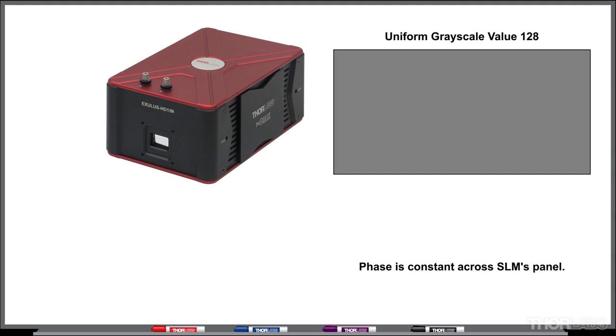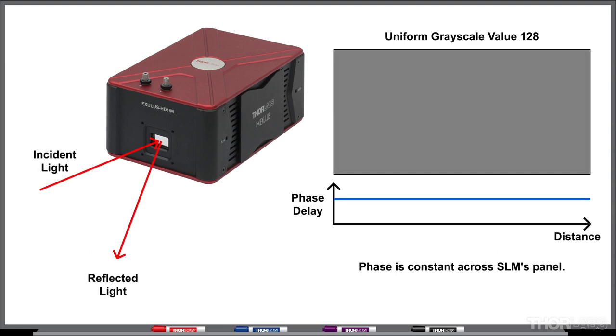For example, uploading this pattern, which is just the same shade of gray at each pixel, results in the SLM reflecting the incident light along the optical axis of the setup like a mirror.